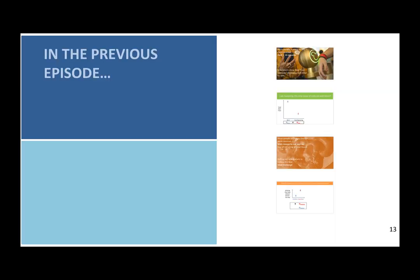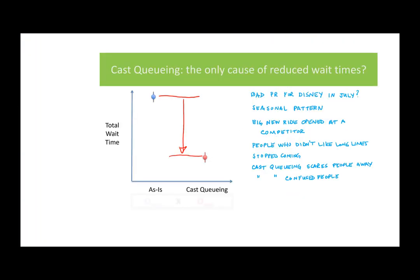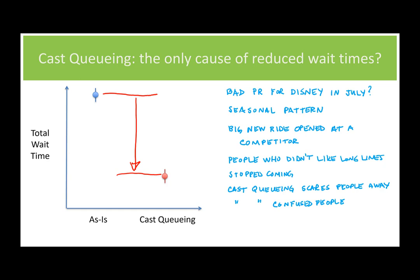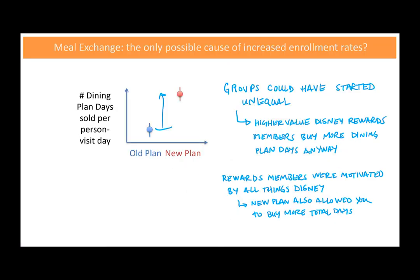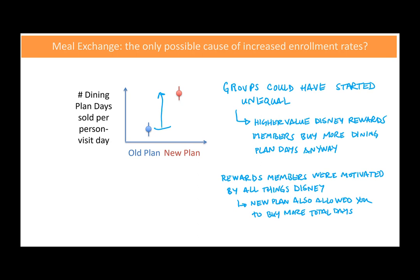You may recall from last time we had two examples from Disney. One was about improving the experience of getting into the parks, and we had a new approach called cast queuing that appeared to be reducing the total wait time to get in. But we had a lot of concerns about the experiment — maybe there were other things that could explain that change. Also, with getting more people to sign up for the Disney Dining Plan, we had a new approach we were testing, and it looked like it was selling more Dining Plan days. But again, we had some concerns about the experiment — maybe there were some other explanations that could explain that increase.